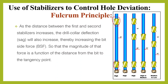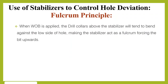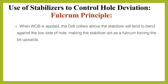Increasing the bit side force — the magnitude of that force is a function of the distance from the bit to the tangency point. When weight on bit is applied, the drill collar above the stabilizer will tend to bend against the low side of the hole, making the stabilizer act as a fulcrum, forcing the bit upwards, as explained.